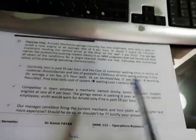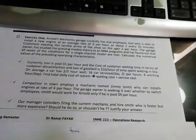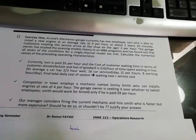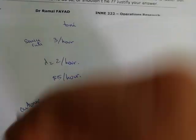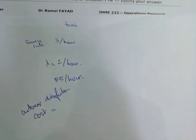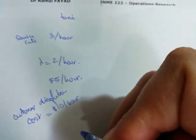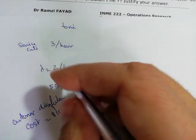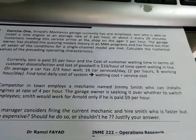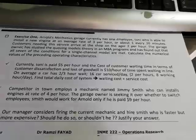Customer dissatisfaction or loss of goodwill is ten dollars per hour. On average, a car has a two-thirds wait time. Sixteen cars are serviced per day, which is two per hour over eight working hours.